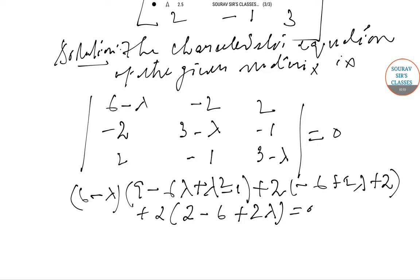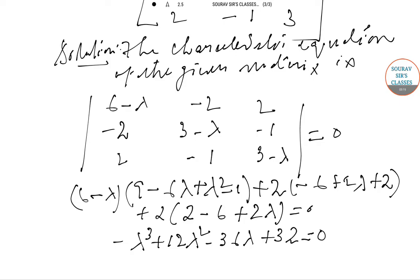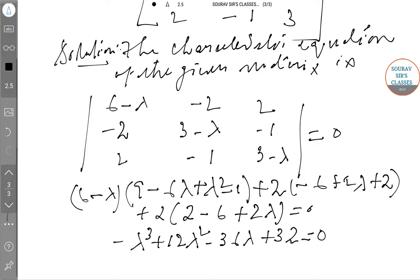When you solve that, the next line gives you: -λ³ + 12λ² - 36λ + 32 = 0. Then solve it by the trial method.